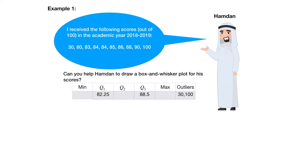Now let's find the minimum, Q2, and the maximum. As you can notice, the dataset values are ordered from smallest to largest. So the minimum is 30 and the maximum is 100. So we can write 30 for minimum and 100 for maximum.